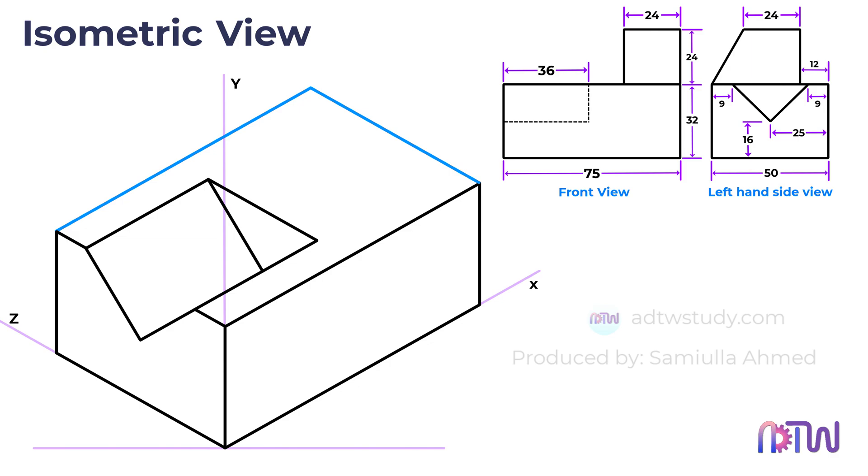The next step involves completing the top portion of the object. Observing the dimensions, the bottom of this top section features a length of 24mm and a width of 38mm. You can deduce this by subtracting 12mm from the total width of 50mm, which accounts for the overall object width.